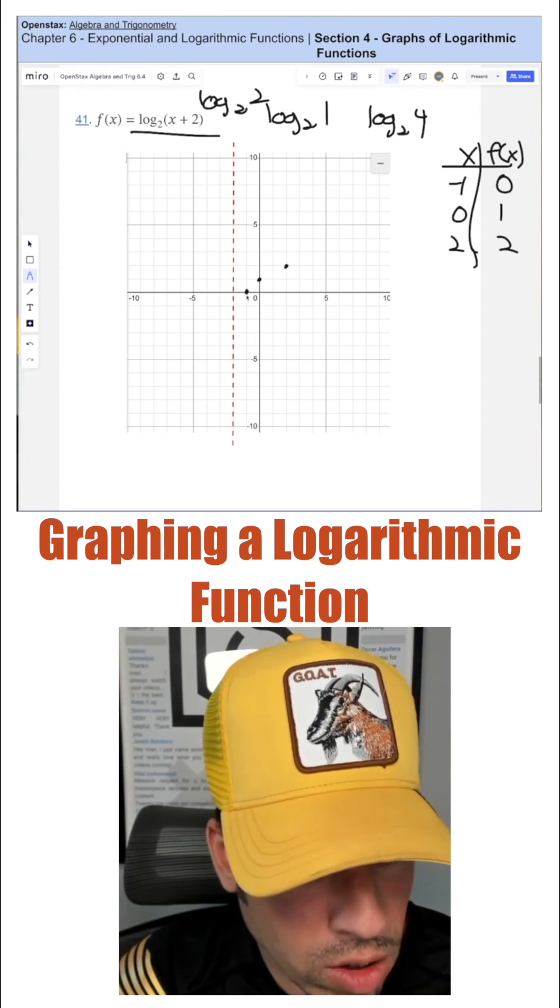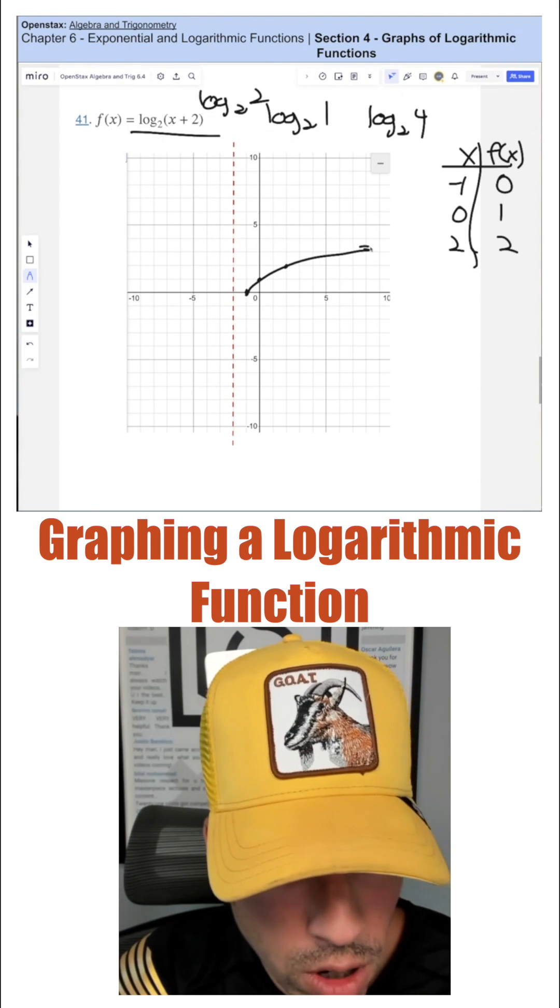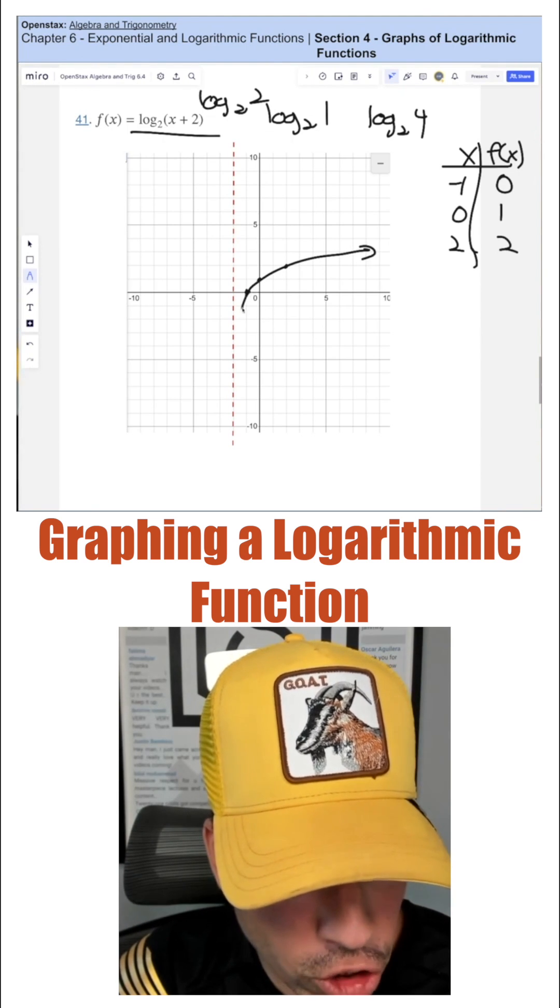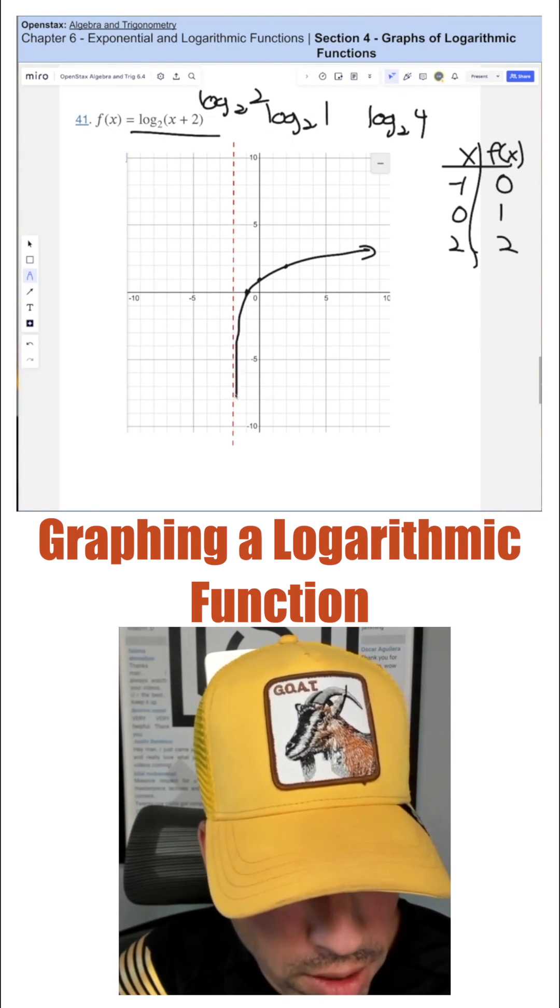And then if we're to plot this out, it's gonna look like this. It's gonna shoot off up like that. And then here it's gonna shoot down, but it's gonna hug that vertical asymptote.